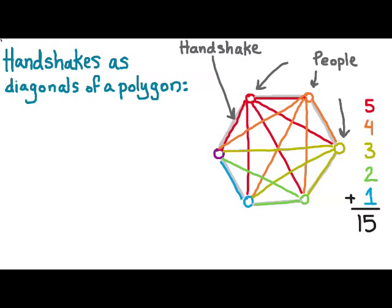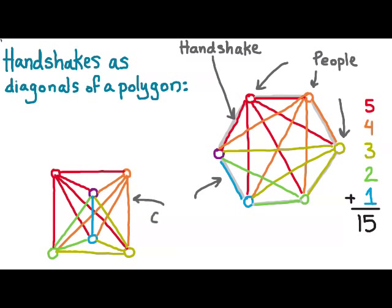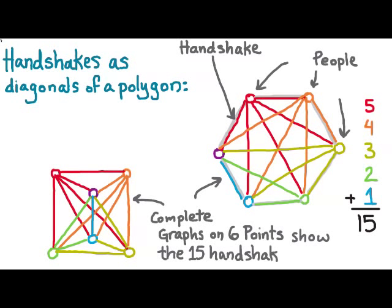Now we don't have to orient all of the people in that particular configuration, so here's another way that we could draw out the picture. And in both cases, this is called a complete graph on six points, and it shows the 15 handshakes for the six people.